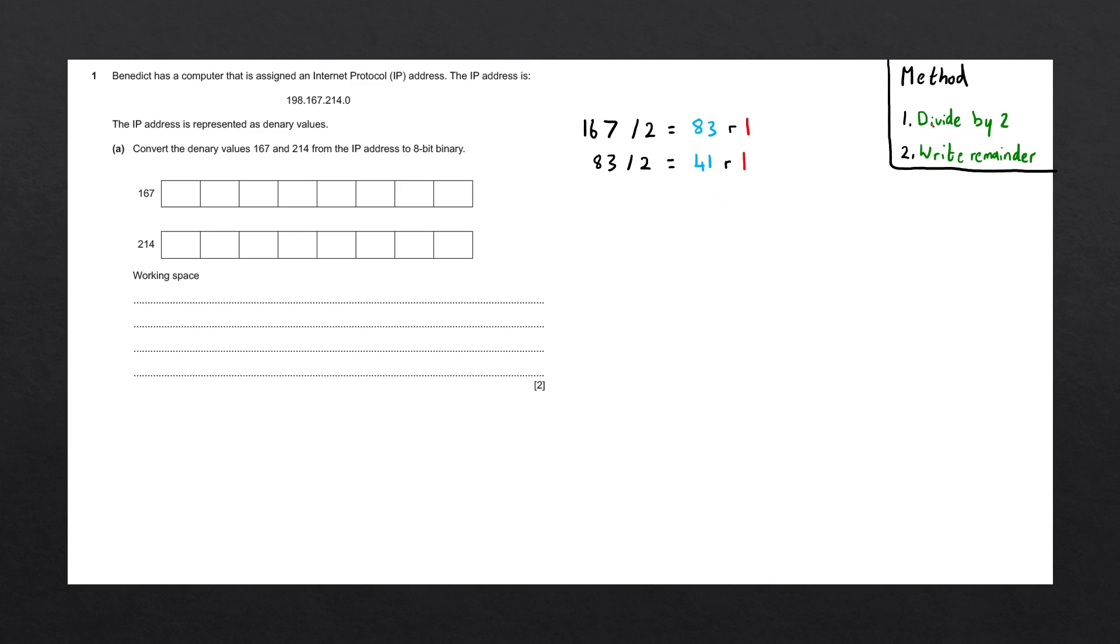Let's now repeat this. So again, divide 41 by two, and that's going to give us 20 remainder one. Let's divide 20 and we get 10 remainder zero. Let's take 10 and divide that by two and we get five remainder zero. Let's take five, divide that by two and we get two remainder one. Let's take two, divide that by two.